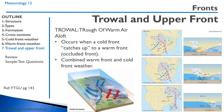We also have fronts called trowels, which is short for a trough of warm air aloft. It's also called an occluded front in the United States; in Canada they call it a trowel and the symbol is slightly different. The occluded front symbol uses alternating red and blue triangles and semi-circles, while the Canadian trowel symbol is magenta with arrows. This occurs when you have a cold front catching up to a warm front.